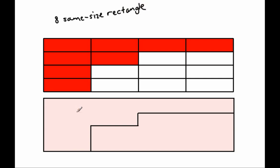So let's call this share one and let's call this share two. In share one, it has eight same-size rectangles. Let's count how many same-size rectangles there are in share two: one, two, three, four, five, six, seven, eight.